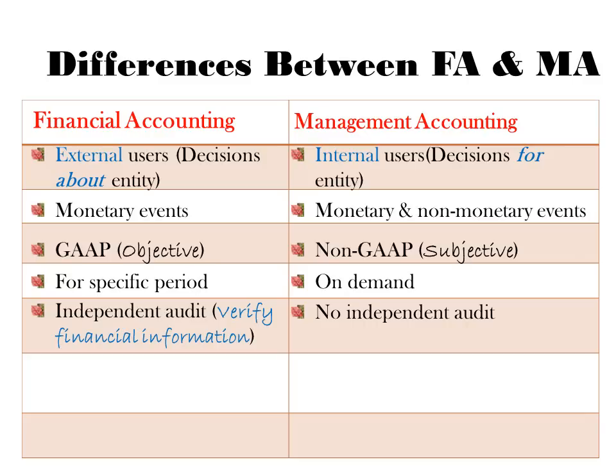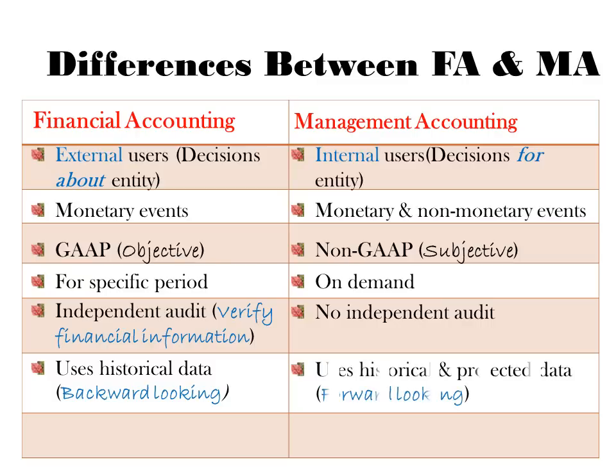In terms of financial accounting, it makes use of historical data. The income statement heading says 'for period ended,' meaning we use historical data to prepare the financials. Therefore, financial accounting is said to be backward-looking. Management accounting, on the other hand, uses historical data but also makes projections. As a result, management accounting is said to be forward-looking.